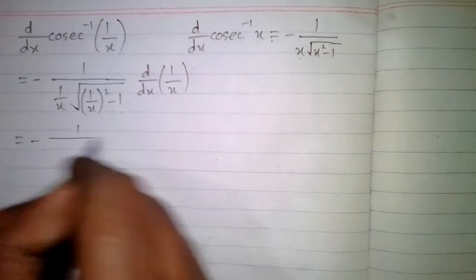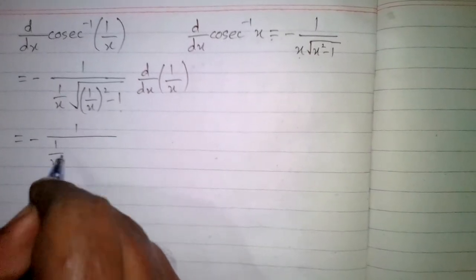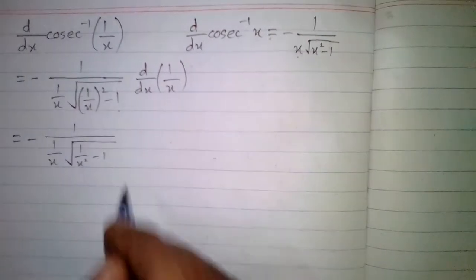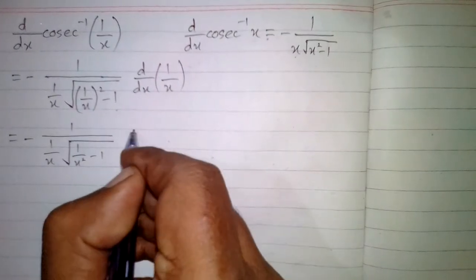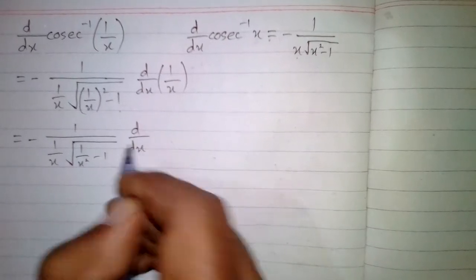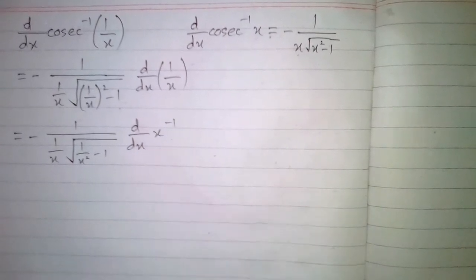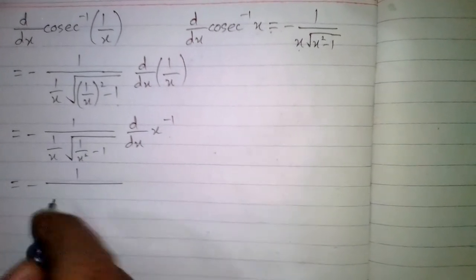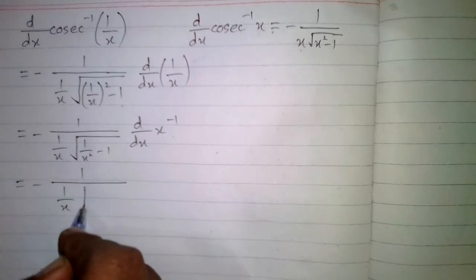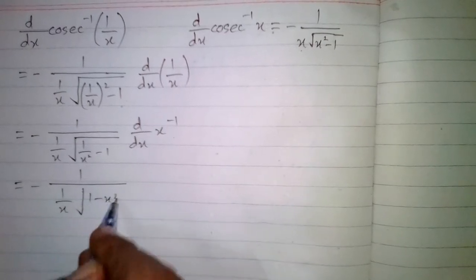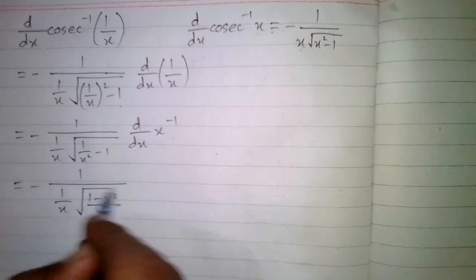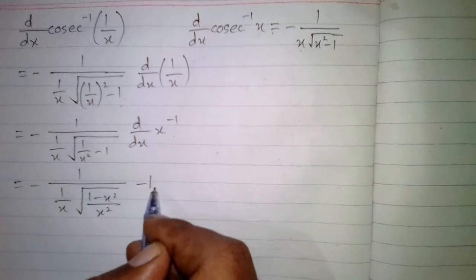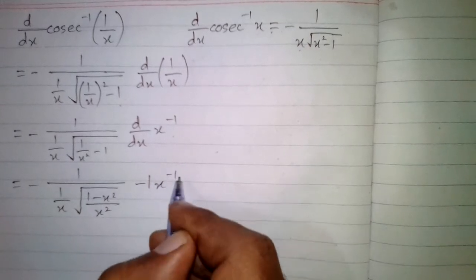We have −1 divided by (1/x) times the square root of (1/x)² − 1, and the derivative of 1/x — we can write 1/x as x to the power −1. Now we have −1 divided by (1/x) times the square root of (1 − x²)/x², and the derivative of x⁻¹ is −1 times x⁻².